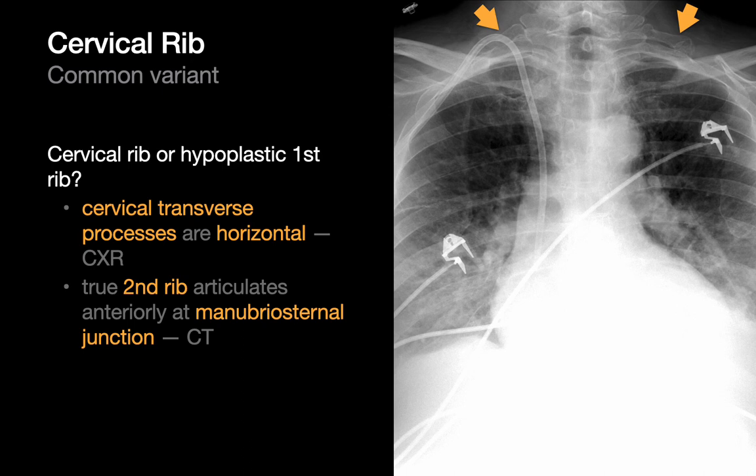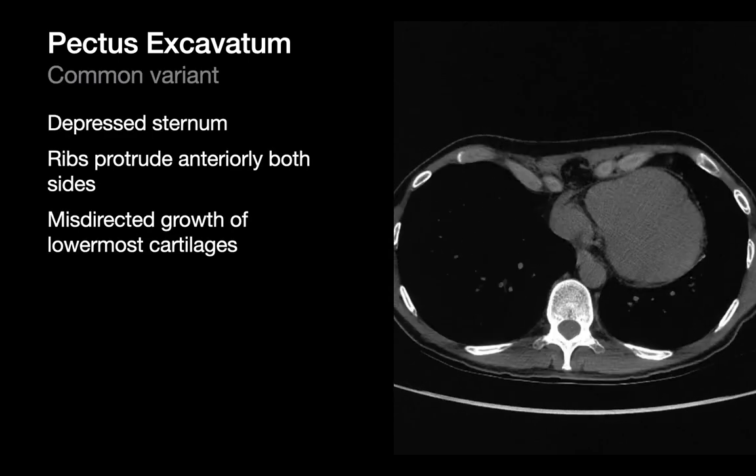On chest CTs you can use the manubrosternal junction as a landmark, since you usually won't have the dens on your chest CT volume. True second ribs generally articulate with the manubrosternal junction, and that will help you figure out if the rib you're looking at is a first rib or not.